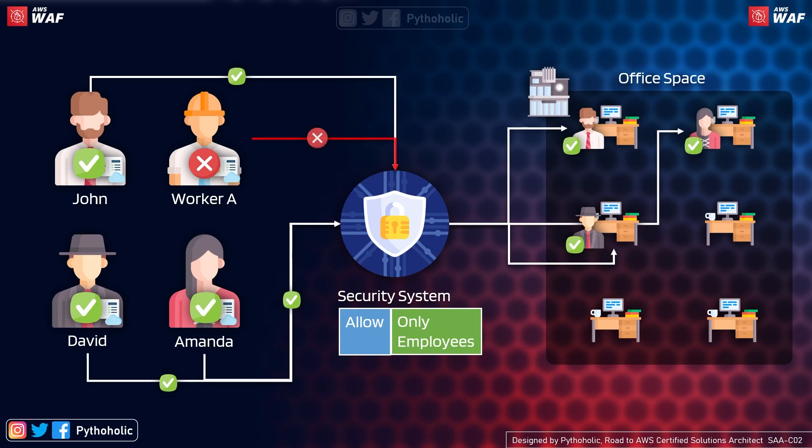To make that decision, we have a security system in place that allows only the employees to enter the development business unit. So three people have access and one does not. John, David, and Amanda are allowed into the business unit, and Worker A is restricted.